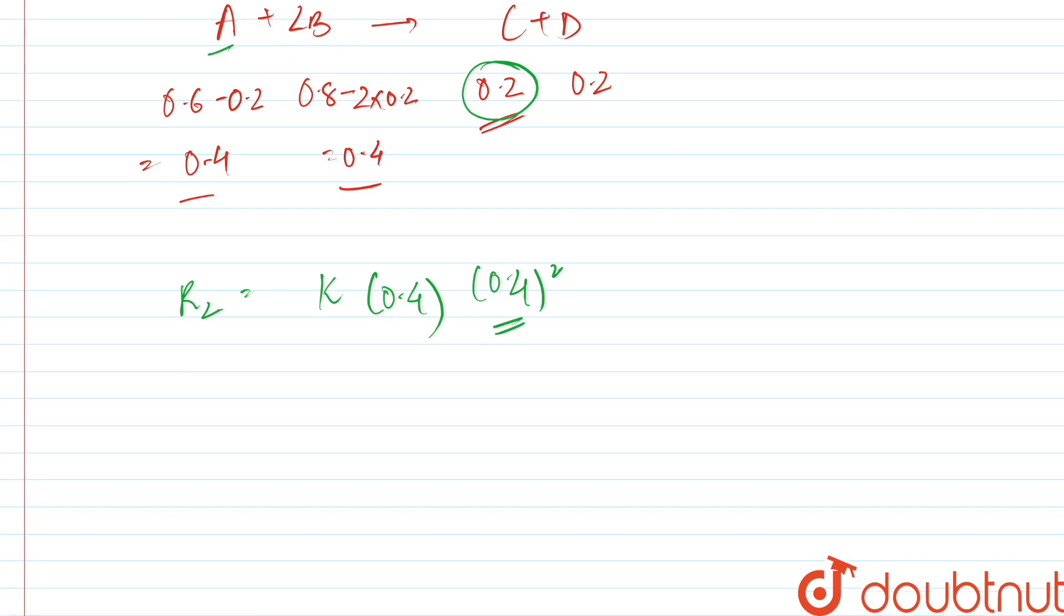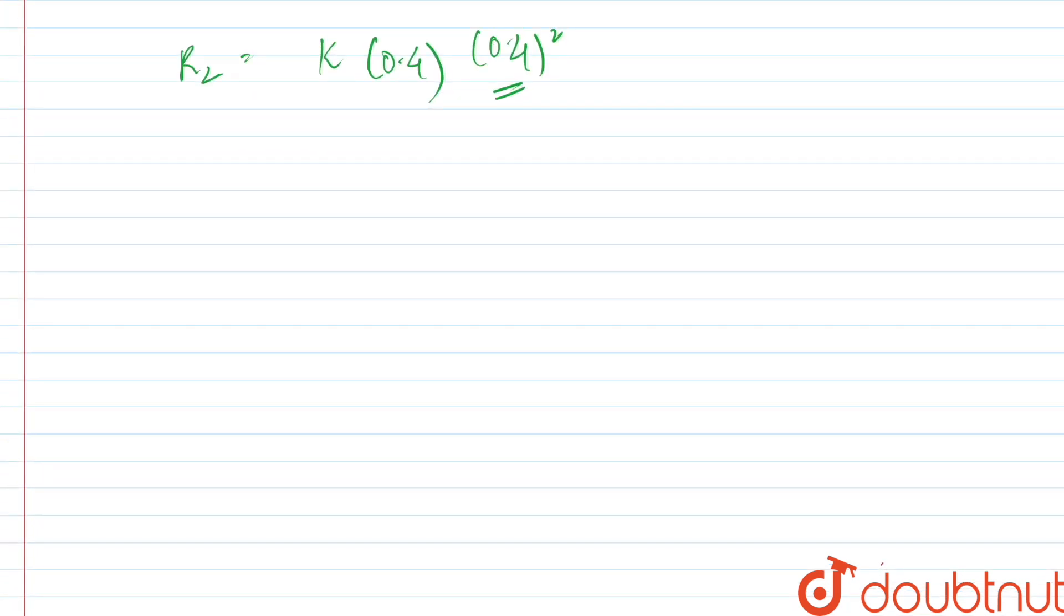0.4 square, that is the partial pressure of B. So finally we have to find out the ratio of final rate upon the initial rate. So here we get k into 0.4 into 0.4 square upon k into